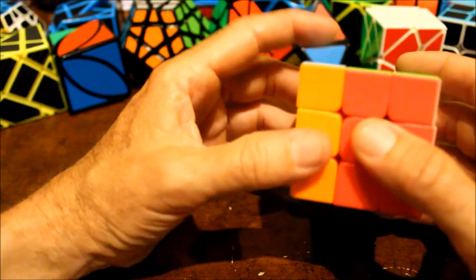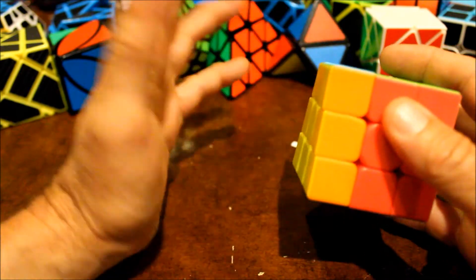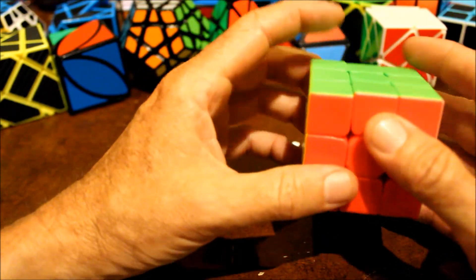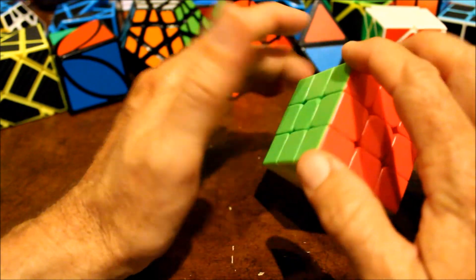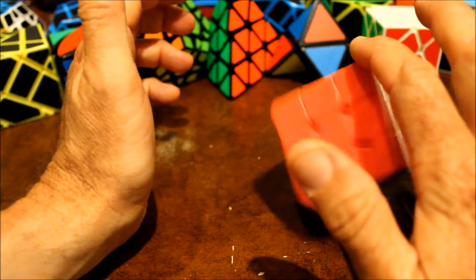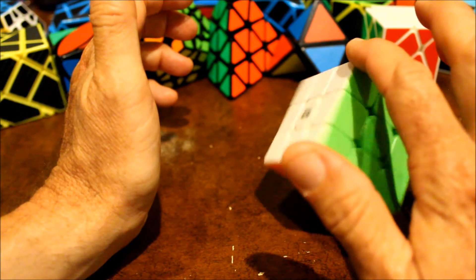So that means we just have to rotate this left side until it's done. And wow, there we go. The Rubik's Cube solved.